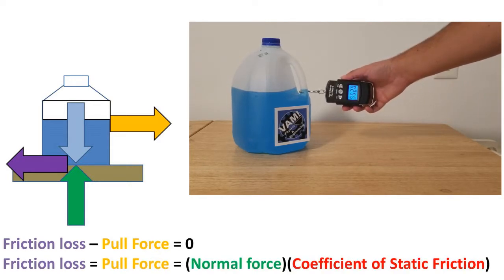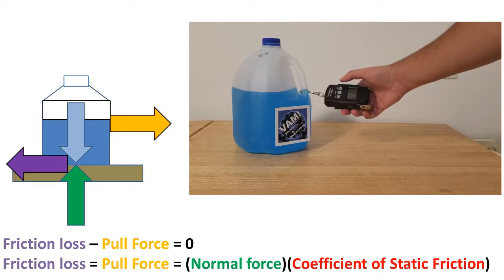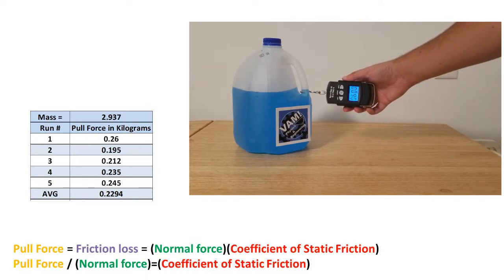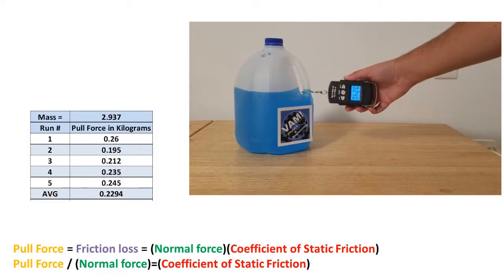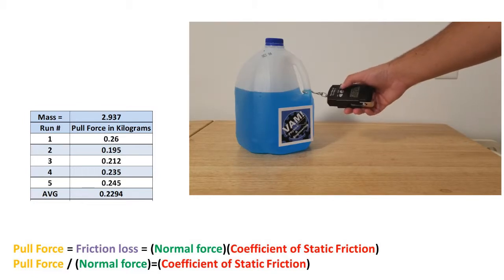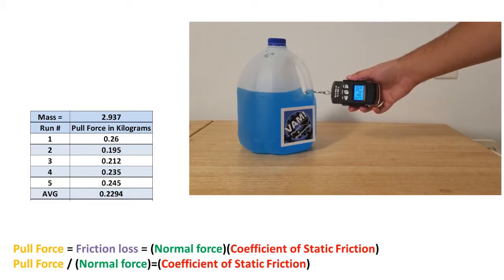Rearranging the formulas, we have that the friction loss equals the pull force, which equals the normal force times the coefficient of static friction. We can further rearrange the formula to get the minimum pull force to cancel out the friction loss over the normal force being equal to the coefficient of static friction. This is the definition of what the coefficient of static friction is.